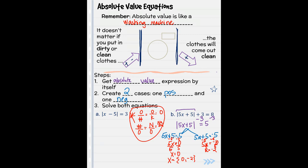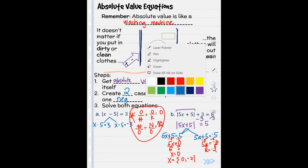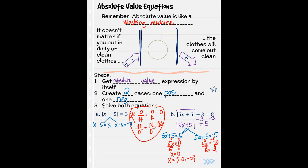Okay, so let's do this again. Step 1, expression by itself. On example A, the expression is already by itself. So we can move on to step 2, setting them both up. One positive and one negative. Then you solve, x minus 5 equals 3 and x minus 5 equals negative 3. Solve by adding 5 on both sides.